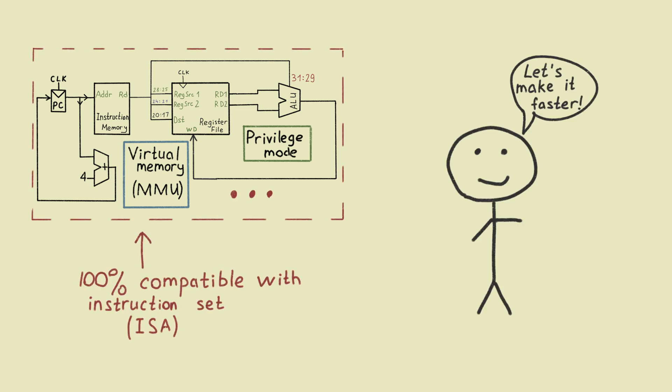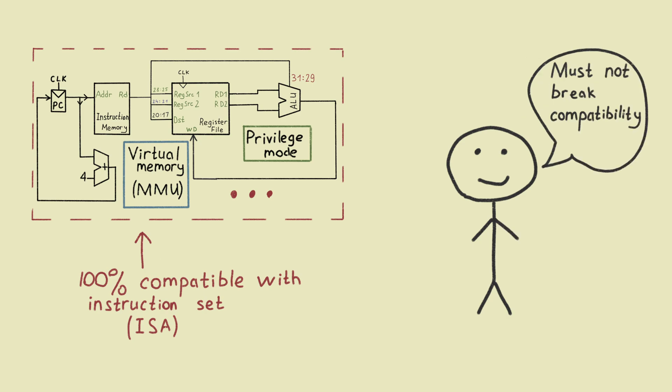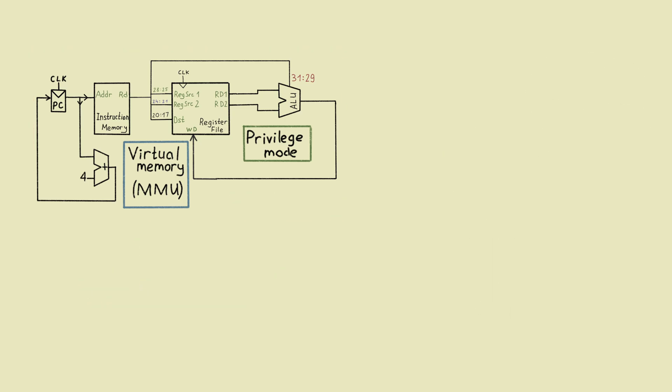But as soon as everything mandatory is implemented, we can start to optimize our CPU implementation. All of our optimizations should be still 100% compatible with the instruction set. And therefore, all the optimizations should be invisible for any software running on the CPU.